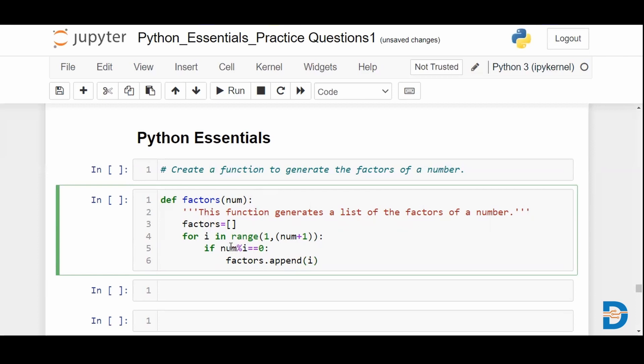So every time you're dividing the number by all the numbers that are less than it or equal to it, if you're able to perfectly divide it, we are adding it to the factors list.